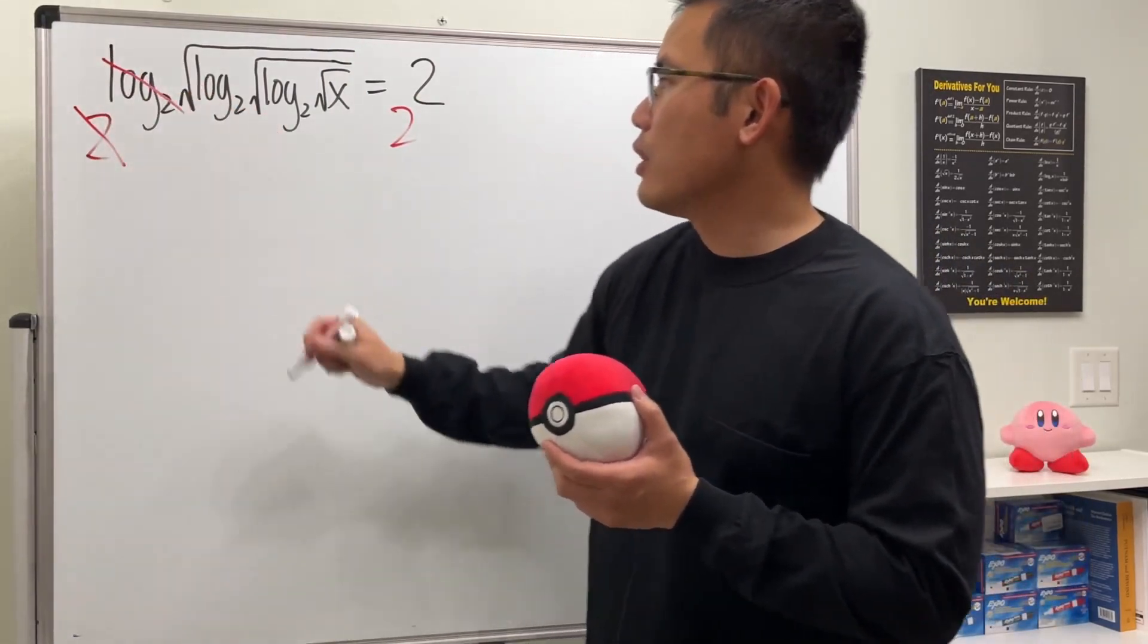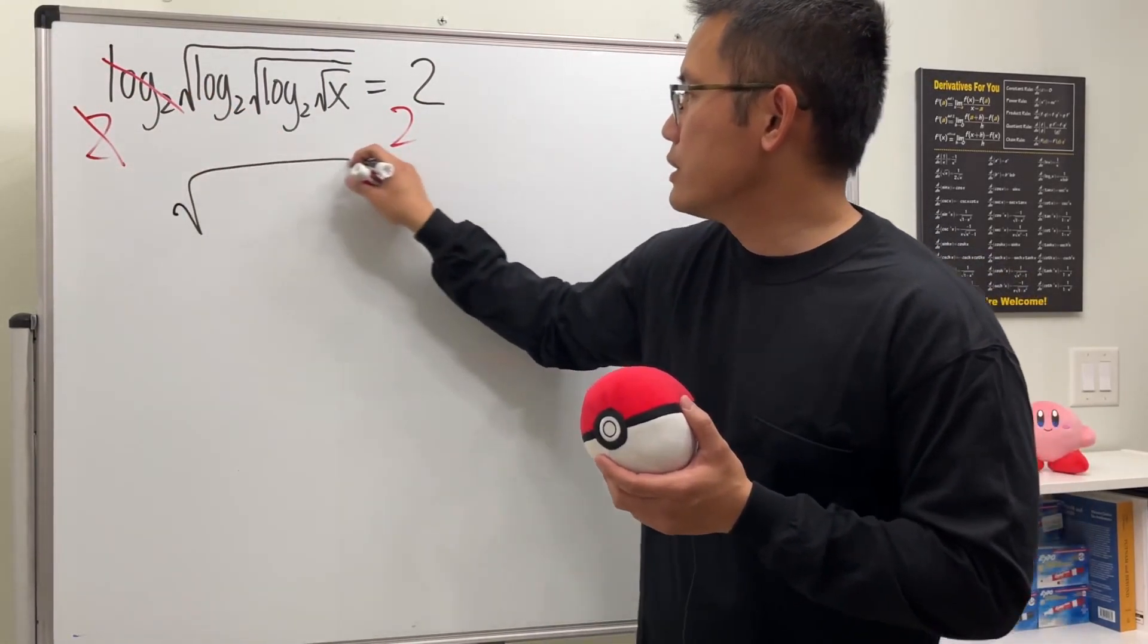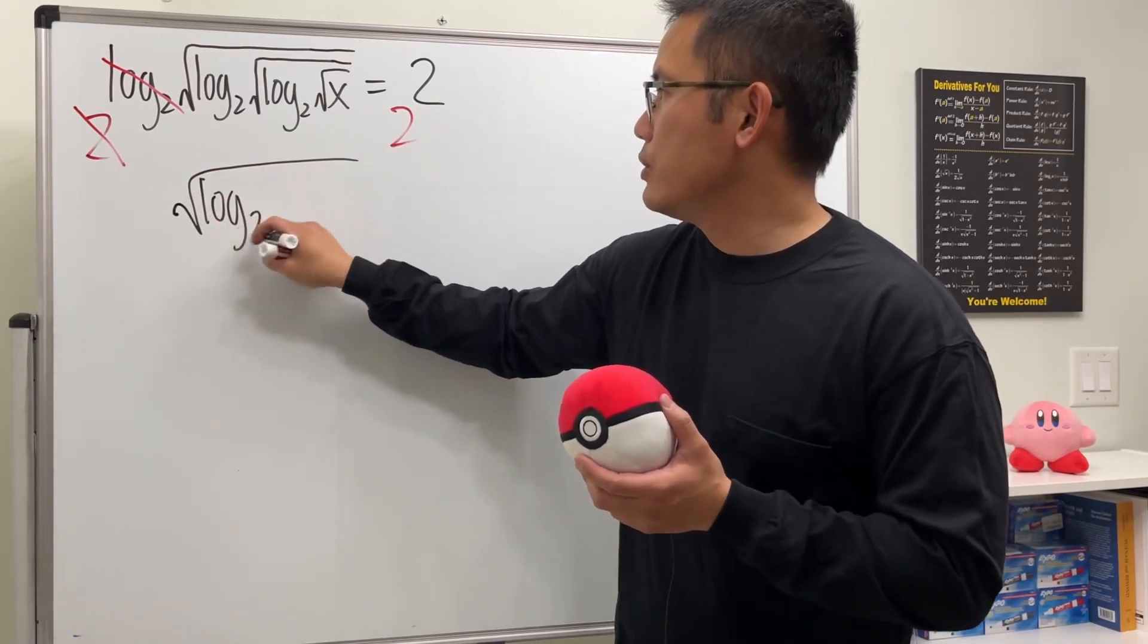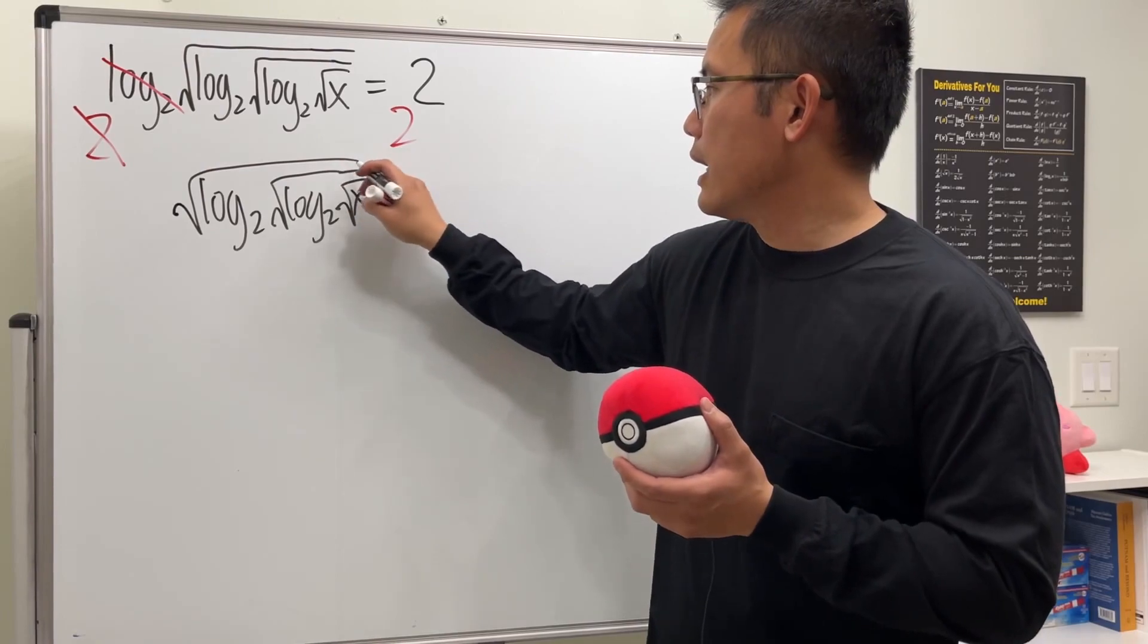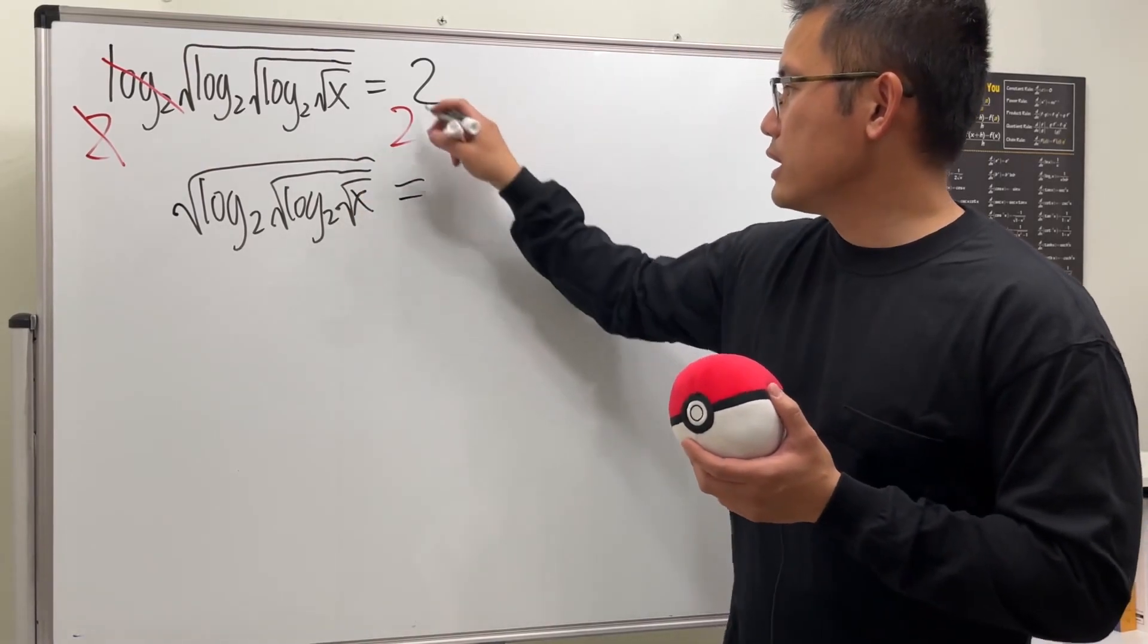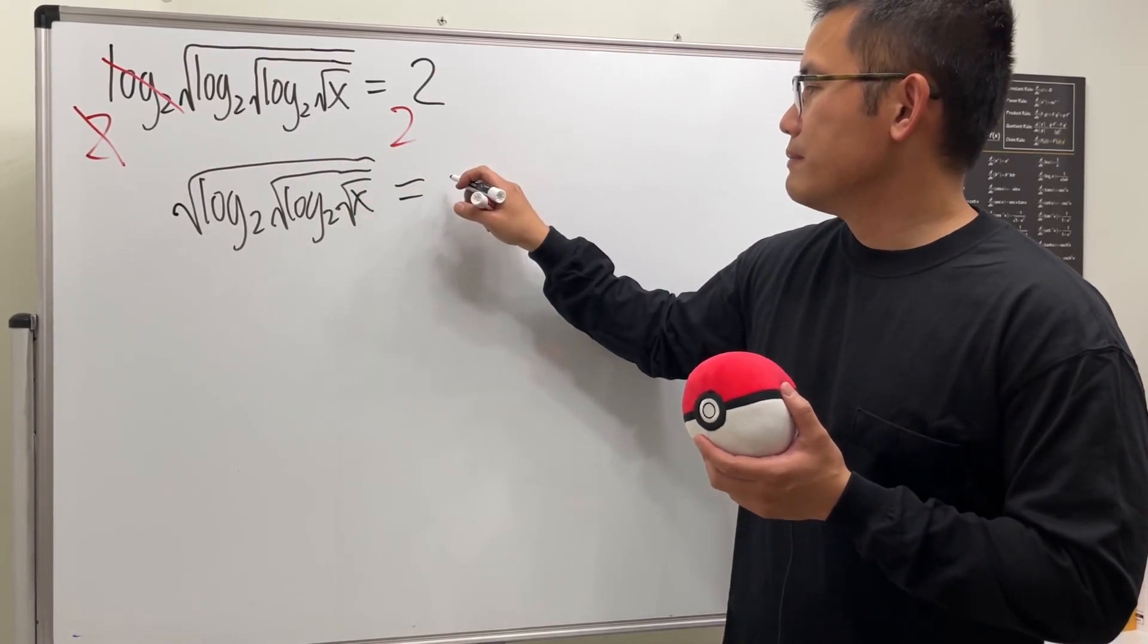This and that will cancel and then we will get square root of log base 2 of the square root of log base 2 of square root of x. Perhaps I will just keep this. I think I'm going to work this out.